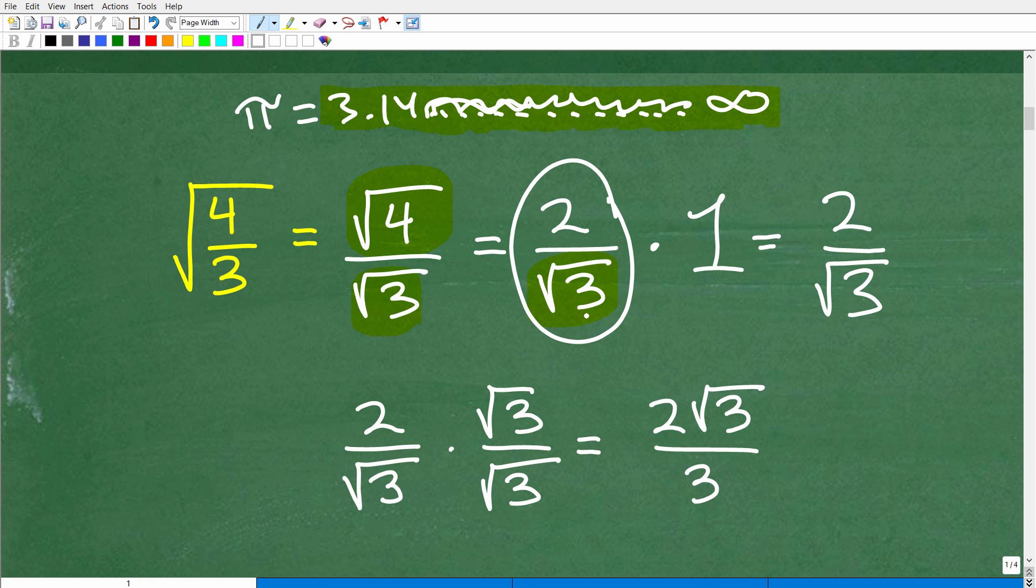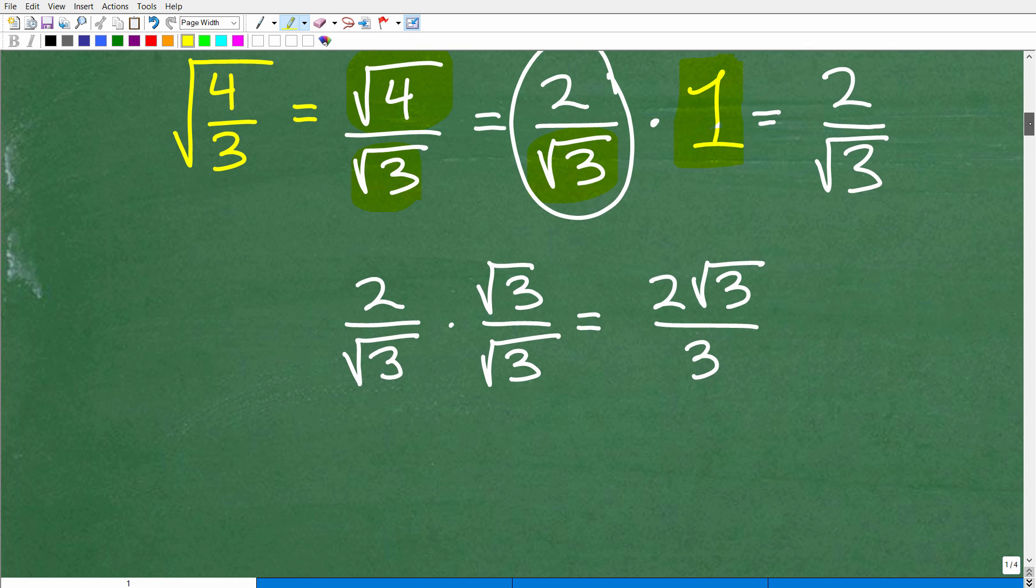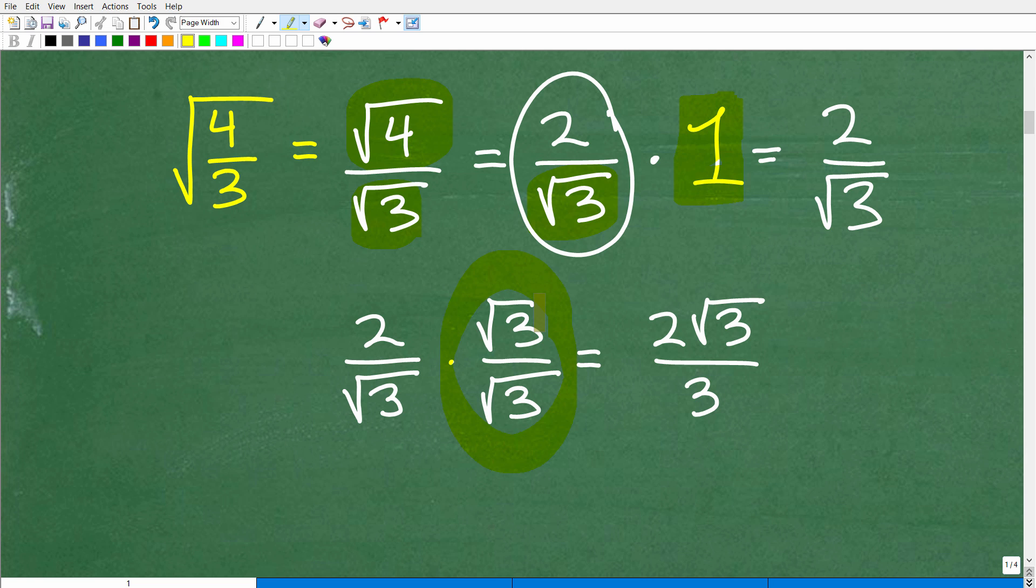It's something called the multiplicative identity. Any number times 1 is just the number itself. But the 1 that we're going to use is a fancy 1, all right? It's a little creative 1. And let's go ahead and show you what that 1 is, okay? Well, this is the 1 that we want to use. So this is the square root of 3 over the square root of 3. Any number divided by 1 is what? It is 1. So really what we're doing here is taking 2 over the square root of 3, and we're going to multiply it by 1. So we're not breaking the problem.